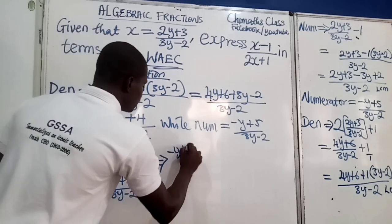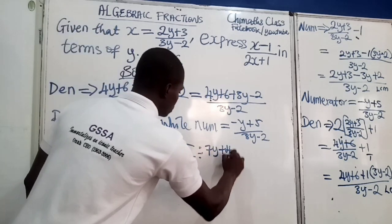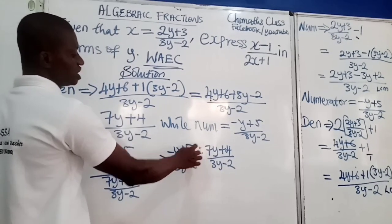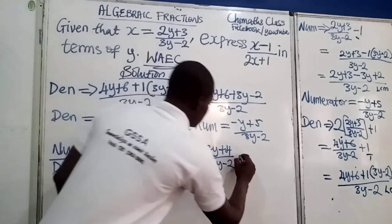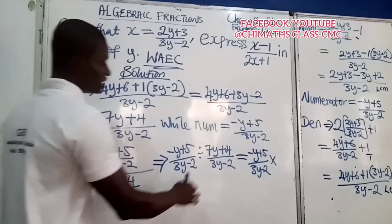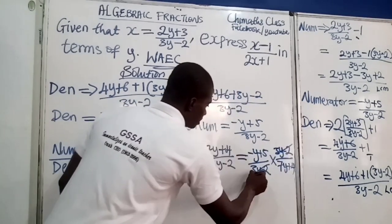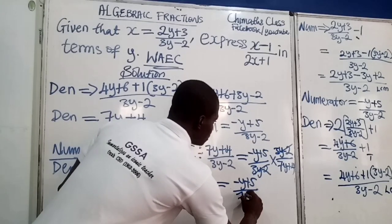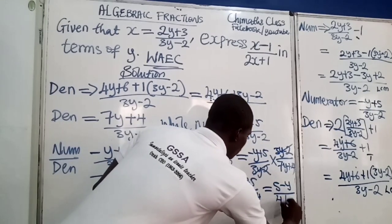Since we are dividing one fraction by another, we change the division sign to multiplication and take the reciprocal of the second fraction. So this becomes minus y plus 5 over 3y minus 2, multiplied by 3y minus 2 over 7y plus 4. The two 3y minus 2 terms cancel, and we are left with minus y plus 5 all divided by 7y plus 4, which is the same as 5 minus y over 4 plus 7y.